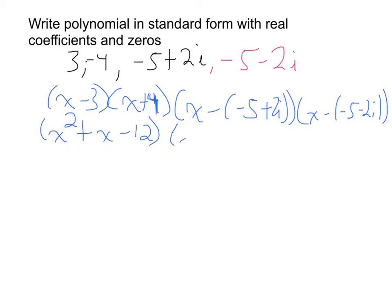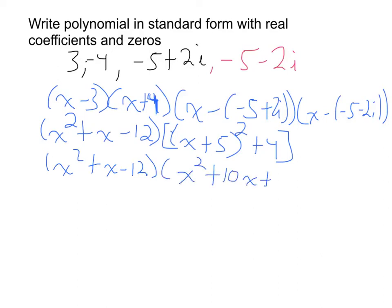It's going to reduce to x plus 5 squared plus 4. That's what happens when I distribute and foil. Then this right side will become x squared plus 10x plus 29.